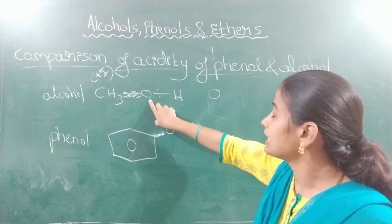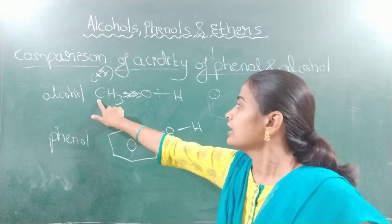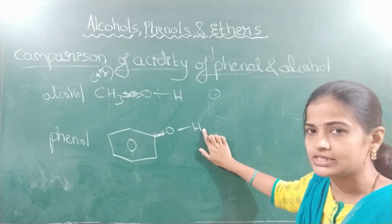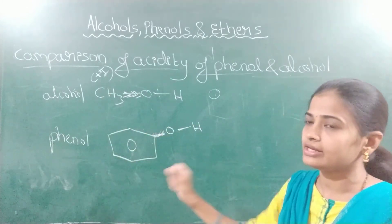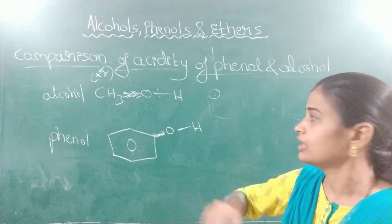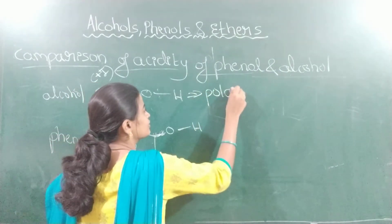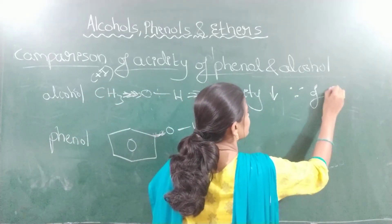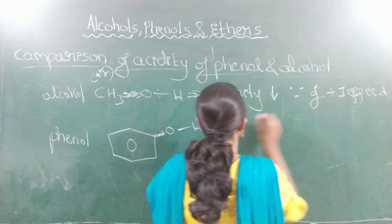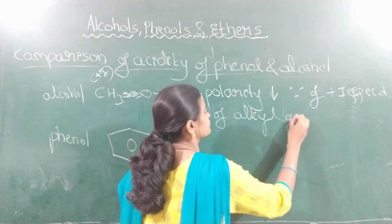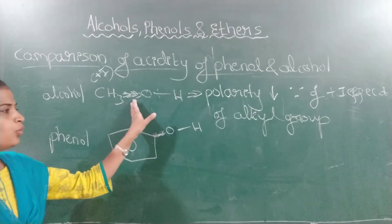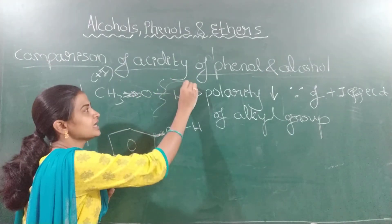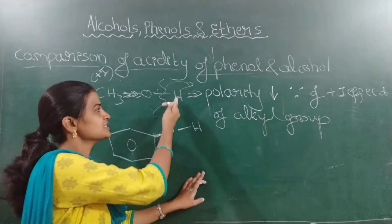In the case of alcohols, the polarity between oxygen and hydrogen decreases because of the plus I effect shown by the alkyl group. When the polarity decreases, bond breaking becomes difficult — it cannot release H⁺ ions. Therefore, alcohols are less acidic.